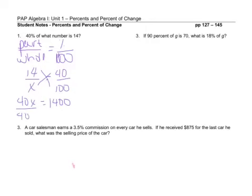And then 14 times 100 is 1400. And so when I divide both sides by 40, I get that X equals 35. And so 40% of 35 equals 14. And that's how we do that problem. We just set it up part over whole equals percent over 100.